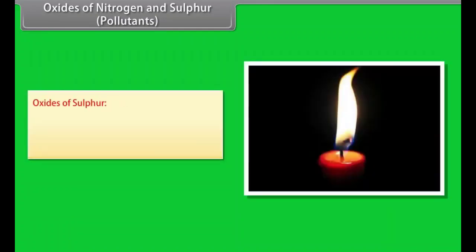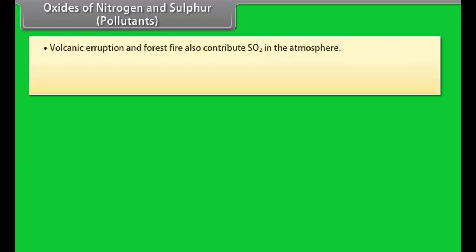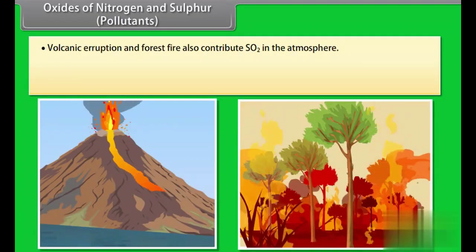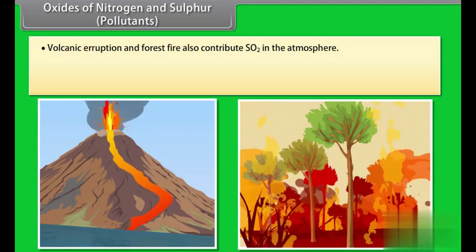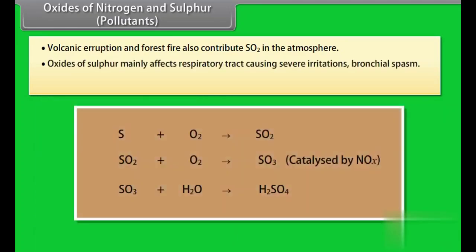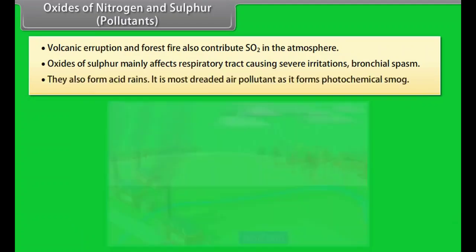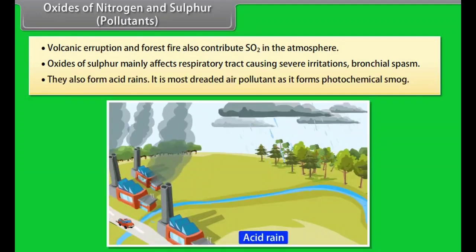Oxides of sulfur. The main source of oxides of sulfur is roasting of pyrite ores, burning of petroleum products. Volcanic eruption and forest fire also contribute SO2 in the atmosphere. Oxides of sulfur mainly affect respiratory tract causing severe irritations, bronchial spasm. They also form acid rains. It is most dreaded air pollutant as it forms photochemical smog.